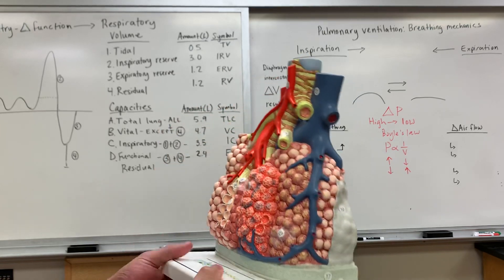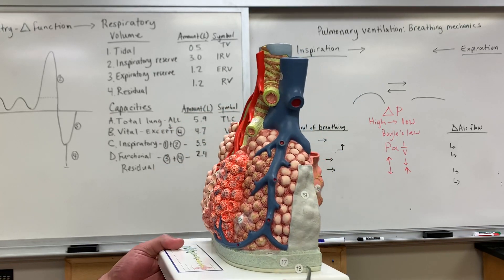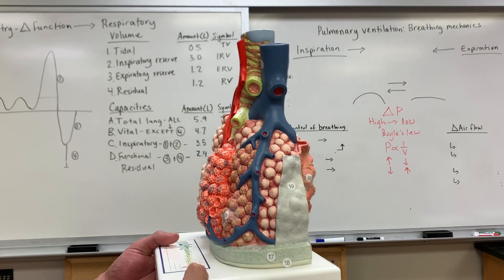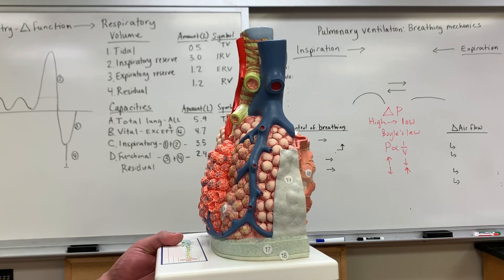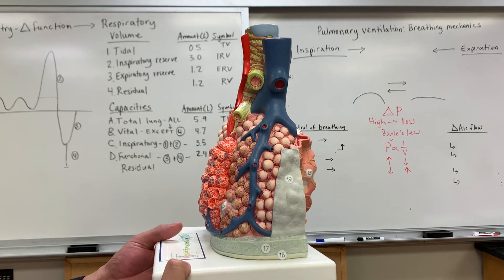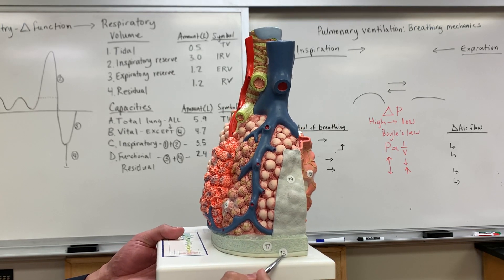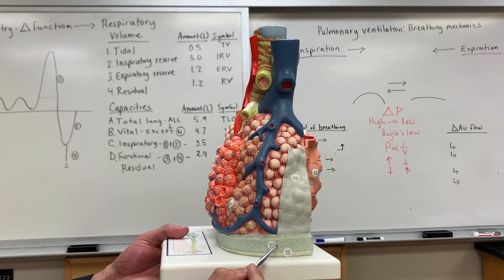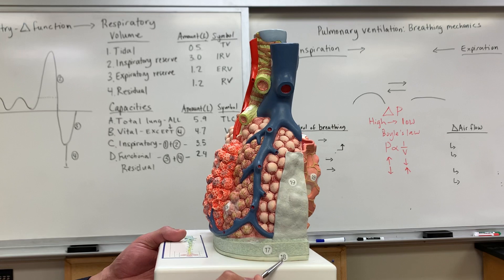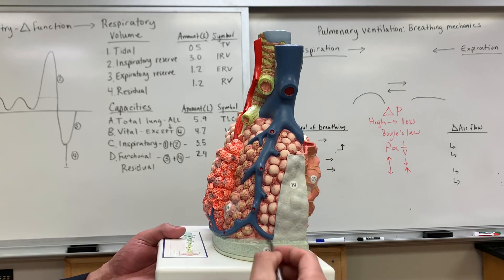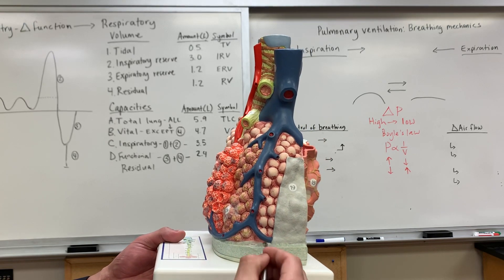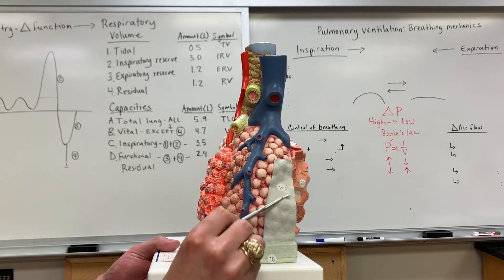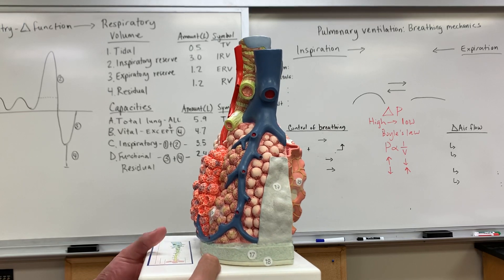Looking at some of the different layers: you have a parietal layer which lines the body cavity, and then the visceral layer which covers the organ itself. Number eighteen is what's known as the serosa. Number seventeen is the subserosa of the visceral layer. Number sixteen is the elastic fibers of the subserosa layer. And number nineteen is what's known as the interlobular septum.